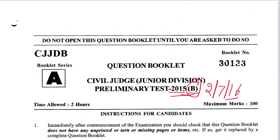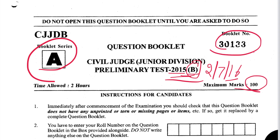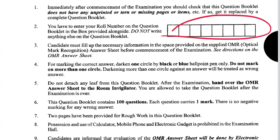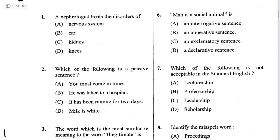This is the question paper 2015 B series, 100 marks. Fill your roll number here; black and blue ballpoint pen can be used; one mark and no negative marking. I have downloaded this paper from the Jharkhand Public Service Commission website, so you can also download it from there. If you cannot find it, check our Telegram channel.